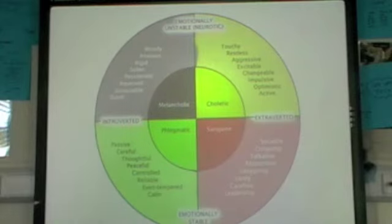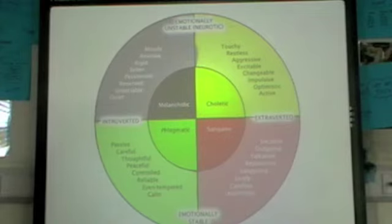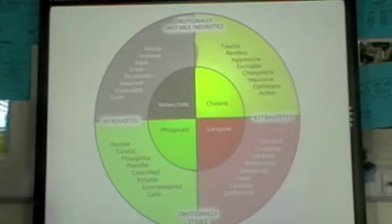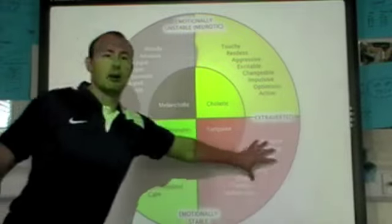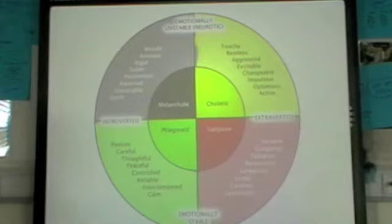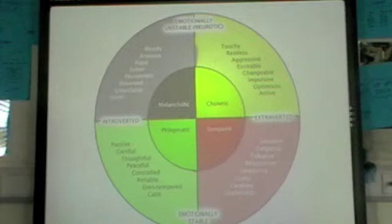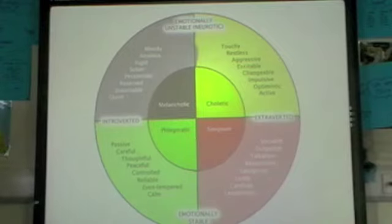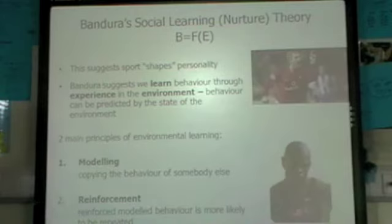The diagram gives us some extra descriptors for the different personalities. In sport, it's been shown that extrovert-stable people are the most common personalities. Extroverts who like being with other people and who can keep their emotions under wraps and stay calm — that stable quality — is probably an advantage in sport.